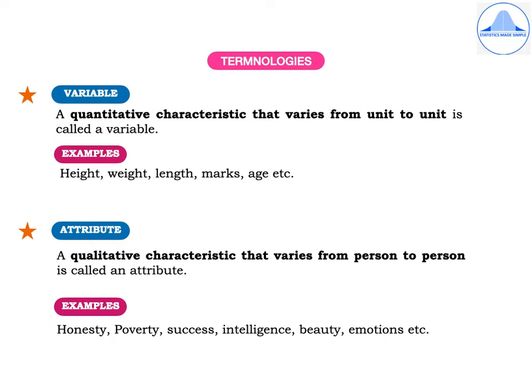Next is an Attribute. A qualitative characteristic that varies from person to person is called an Attribute. You know that quality characteristics cannot be measured numerically and you cannot express them in any unit of measurement.